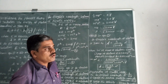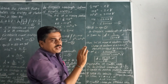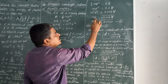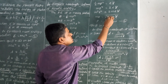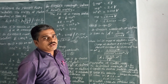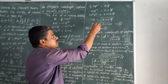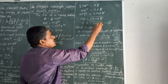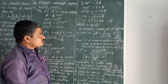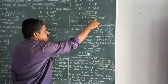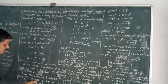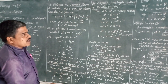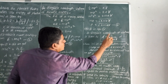From half mv squared is equal to eV, we get mv squared is equal to 2eV. Multiplying both sides by m gives m squared v squared is equal to 2meV, so momentum p is equal to square root of 2meV. Substituting this into the wavelength equation, lambda is equal to h by square root of 2meV.